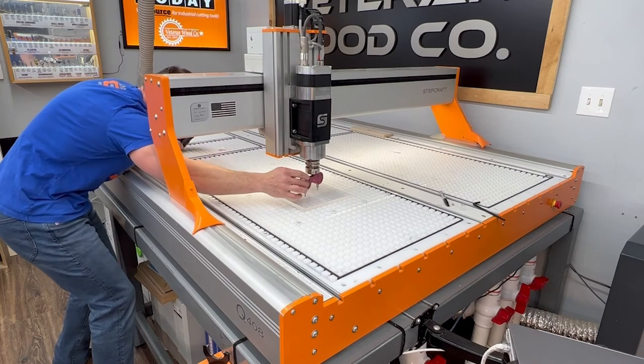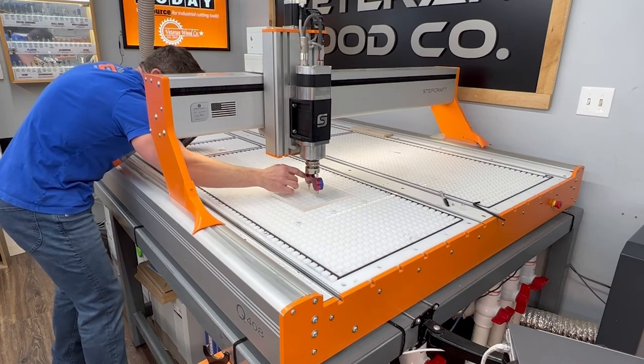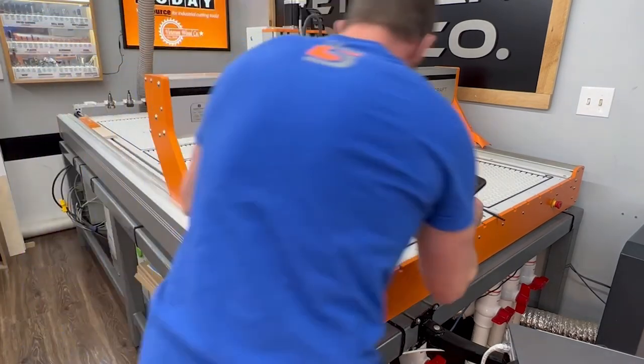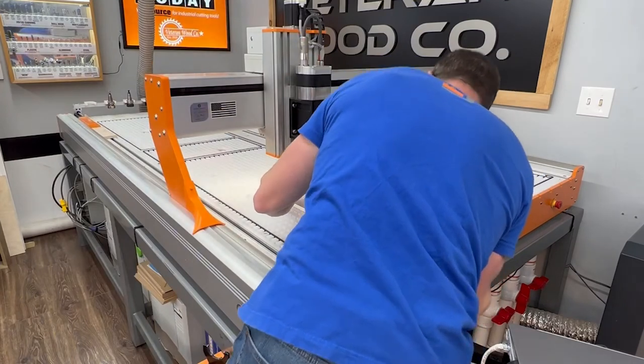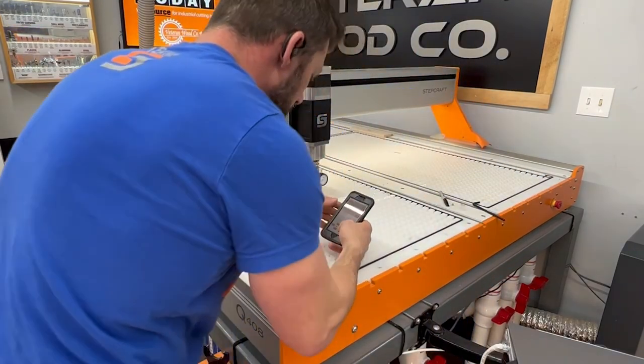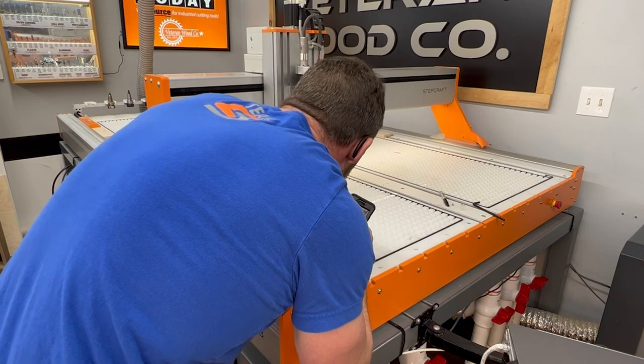To verify you followed the tramming procedures properly, rotate your tram gauges 360 degrees and notice how your tramming needles don't move. Congratulations, you've just perfectly trammed a CNC machine.